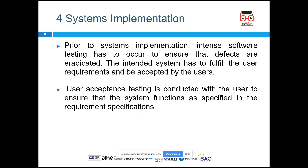Systems implementation refers to the implementation part — after procurement is done, when the system is new and is being explained to everyone in the organization. For this, there is a design phase, a development phase, and then a testing phase. Throughout all these phases, it is very important for employees to be involved with the vendors providing the solution so that the requirements of the organizations are adequately met.